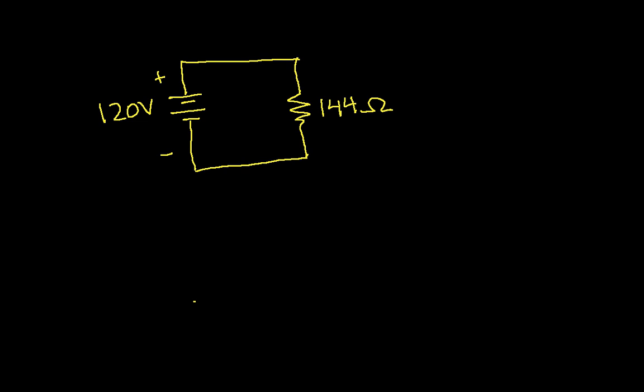But for now, just think of this as a voltage source of 120 volts connected to a resistor of 144 ohms. And so, we'll define a current here. And our goal is to find this current.